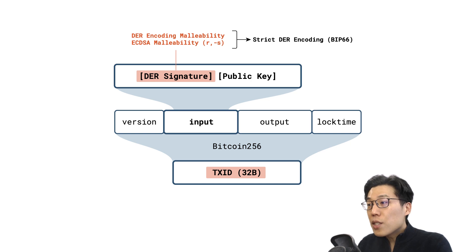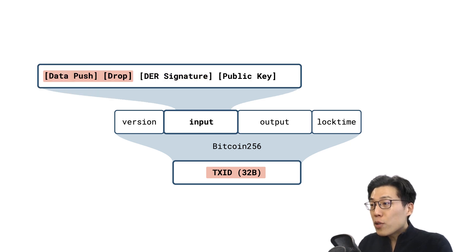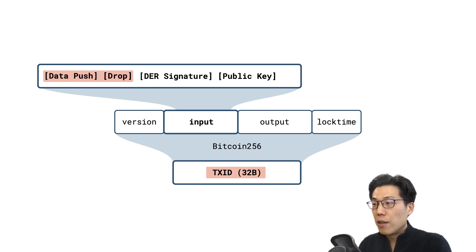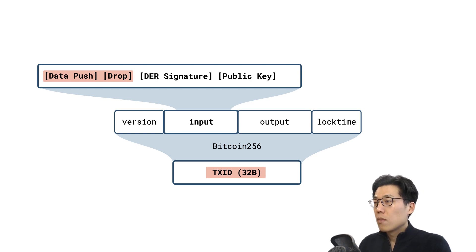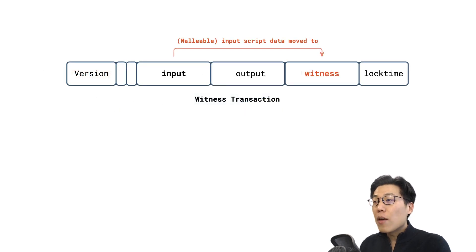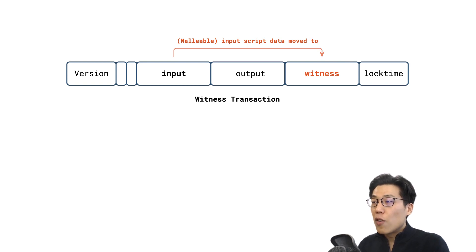However, besides the signature itself, the input script operations can also be modified without affecting validity. For example, we can add a push data to the stack and subsequently drop it again without affecting the stack state for later operations. This is a malleability issue that cannot be easily solved. What Segregated Witness did was come up with a smart way to move out the entire script data to another data structure, enforcing an empty input script field to solve malleability.